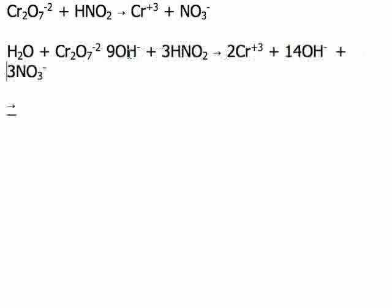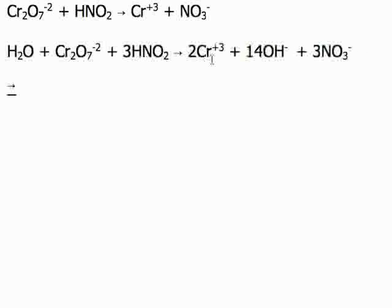We have 9 OH minus and 14 OH minus, so we'll get rid of those 9, and 14 minus 9 is 5, and now everything should be perfect. 2 hydrogens plus 3 hydrogens is 5 hydrogens. 5 hydrogens.